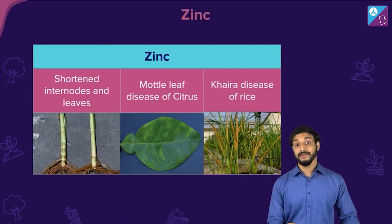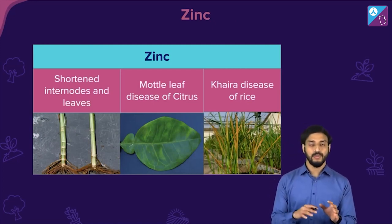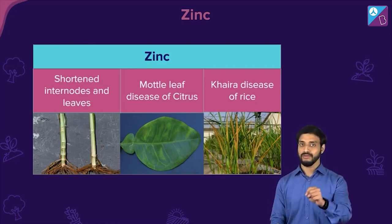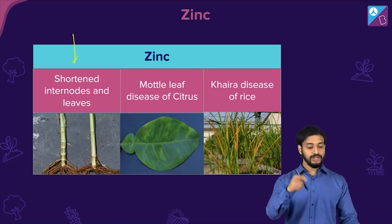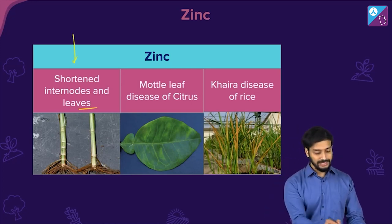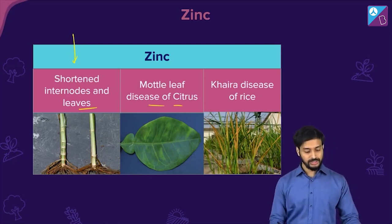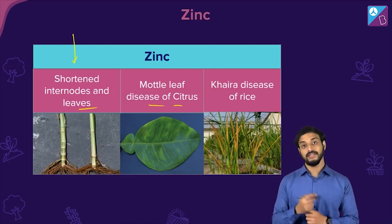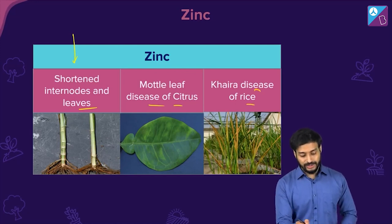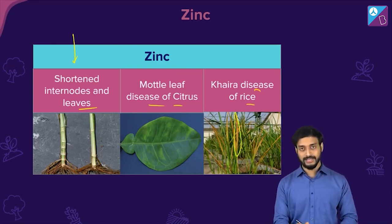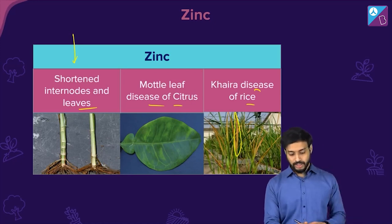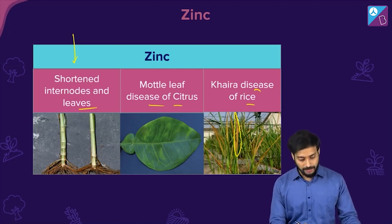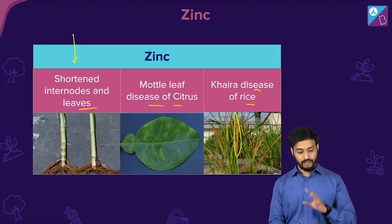Zinc deficiency is important — note it carefully as questions are likely to be asked. It causes shortened internodes and a disease called mottle leaf disease of citrus — where the leaf shows abnormal formation. It also causes yellowing and discoloration of rice plant leaves, along with stunted growth.